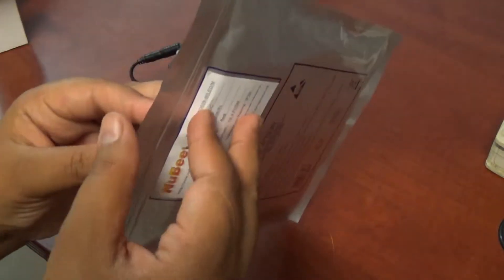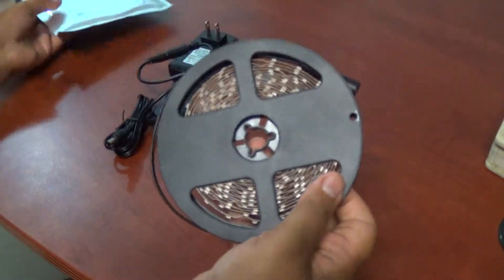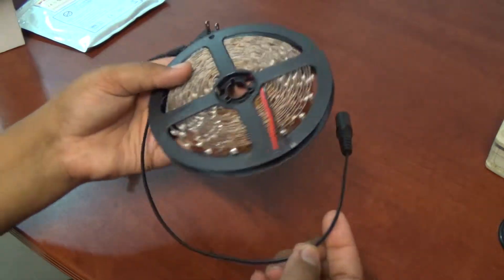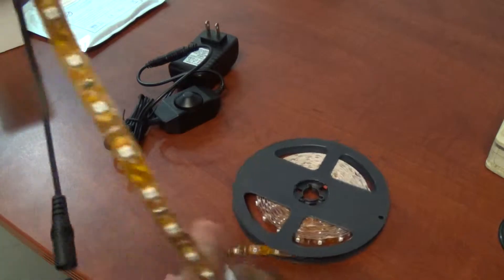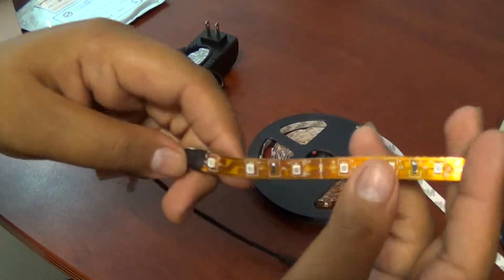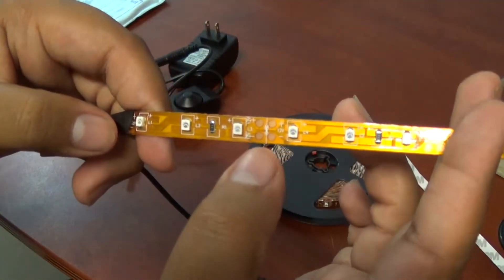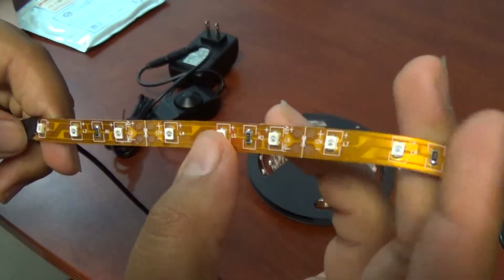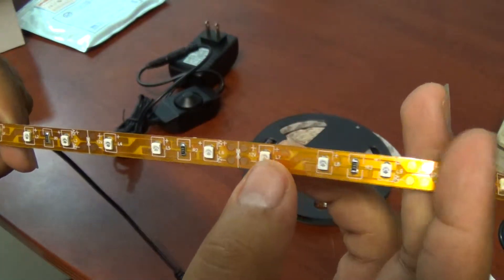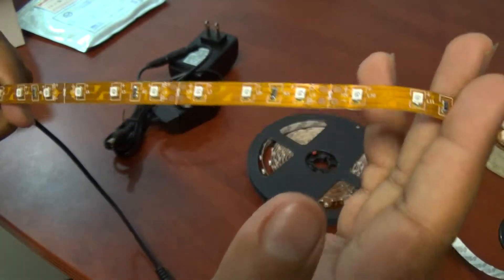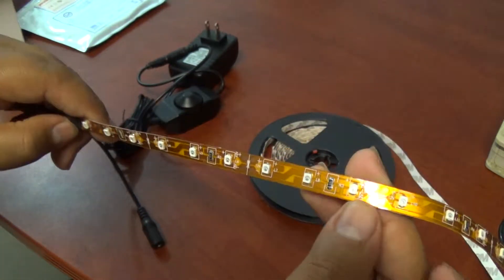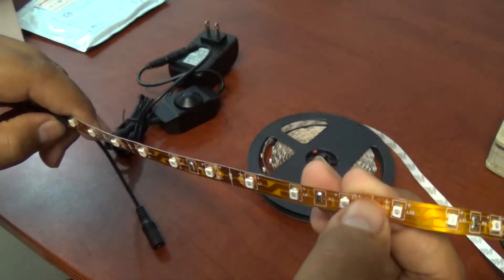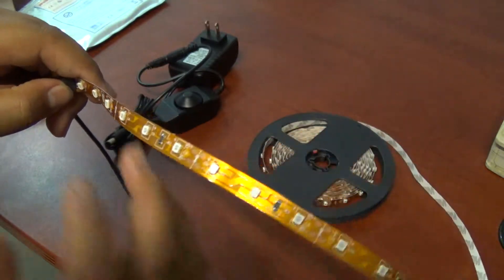Then we have here your LED strip lights. In each meter there are 60 LEDs, and in every three LEDs you have a cuttable mark. That's if your LEDs are too long and you want to make them shorter. That's why you have this cuttable mark, just to cut it anywhere you would like.